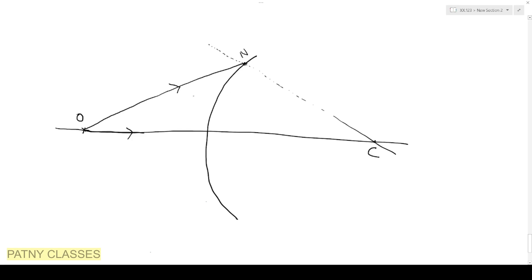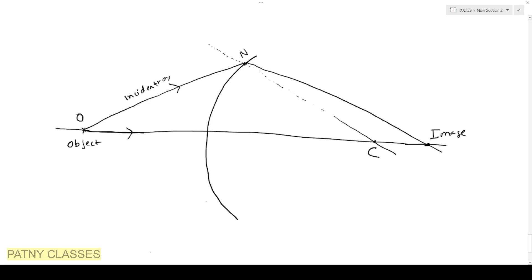These are the incident ray and the refracted ray. The refracted ray converges at point I — that is the image formation. So O is the object and I is the image. This point C is the center of curvature, and therefore this distance we can take as R — the radius of curvature.